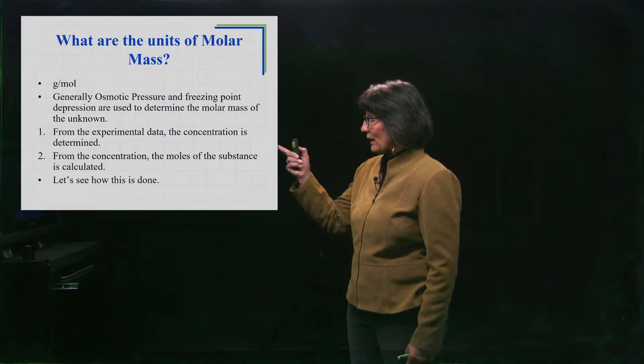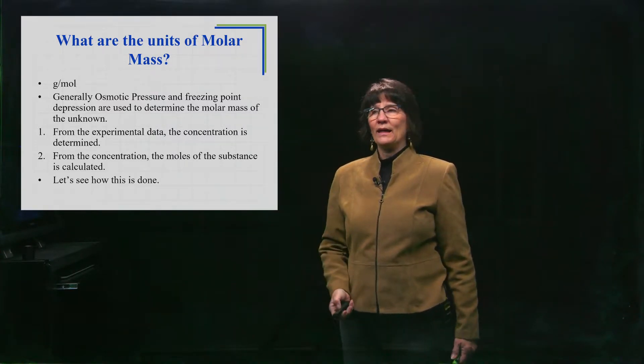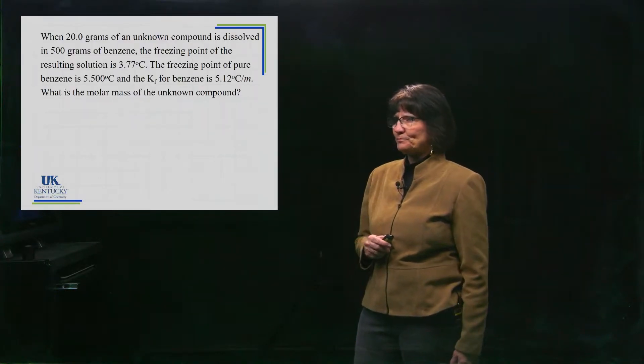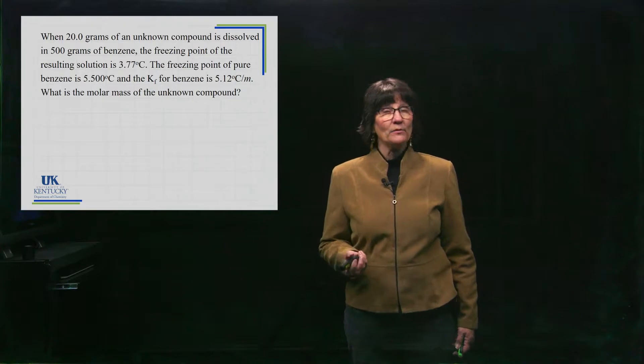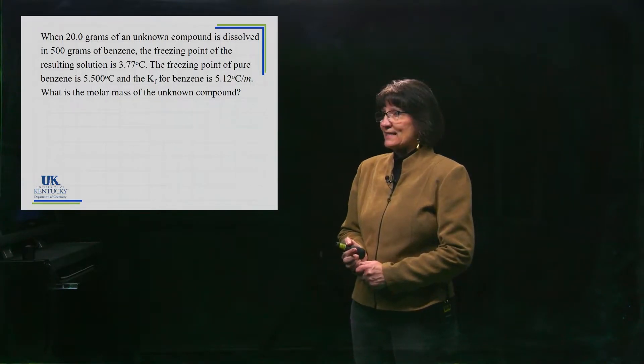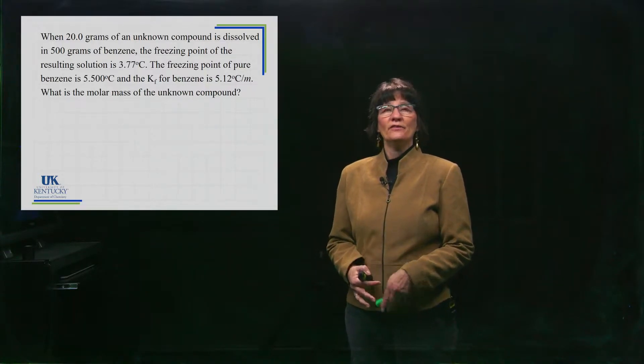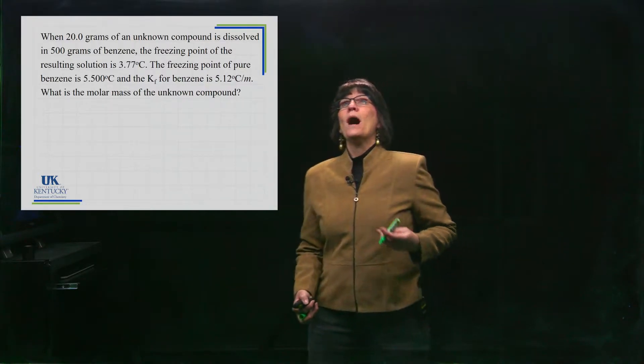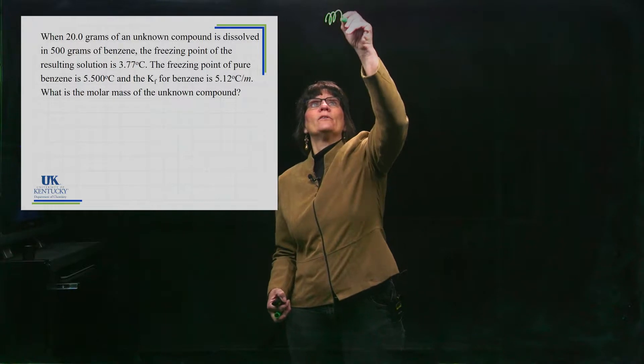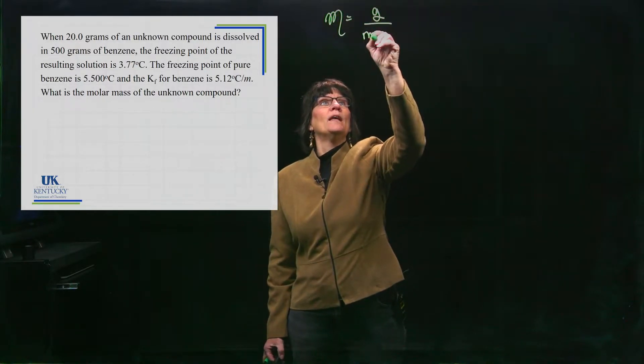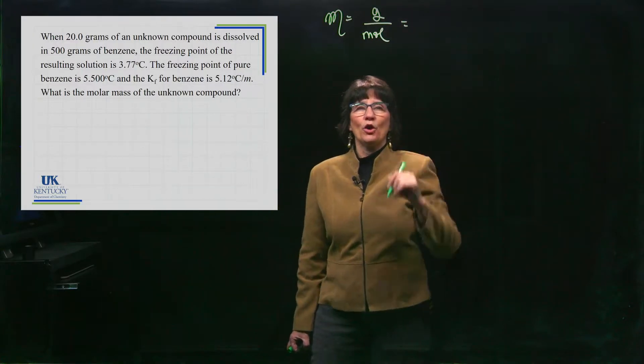We'll see how we'll do that. And then we'll be able to now know the grams, we'll know the moles, we can get the molar mass. So let's see how it's done with this example problem. I have 20 grams of an unknown substance. It is asking me to determine, in that last sentence, what is the molar mass of this unknown compound? So I know I want the molar mass and I know the molar mass is the grams per mole.